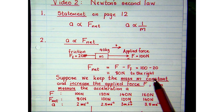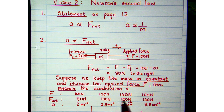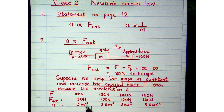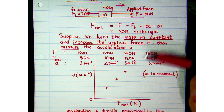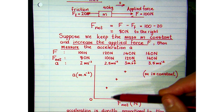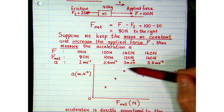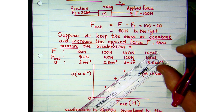We are keeping the mass of the object constant at 40 kg and increasing the net force. The acceleration also increases. If we plot a graph of acceleration versus net force for those four data points — net forces of 80, 100, 120 and 140 N with their corresponding accelerations — and draw a line of best fit, we get a straight line through the origin.